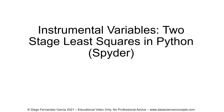In this video we are going to study instrumental variables with two stage least squares in Python using Spyder IDE. As you can see at the bottom of the screen, this is an educational video only and no professional advice is included within it.